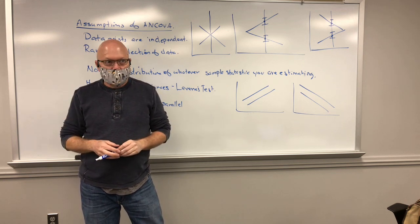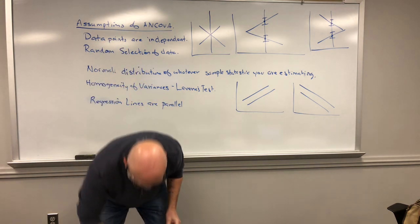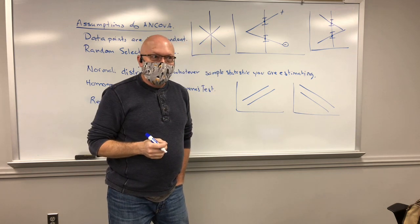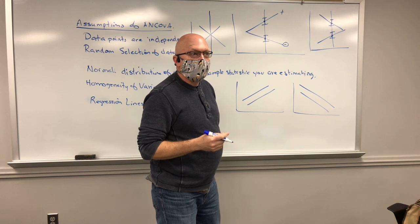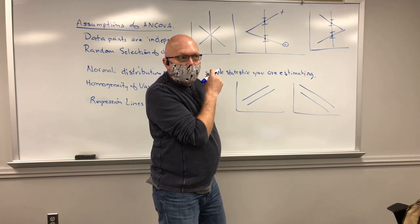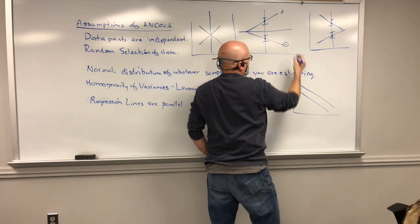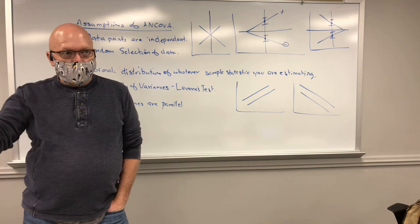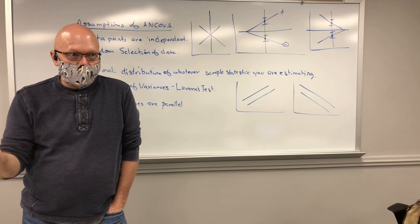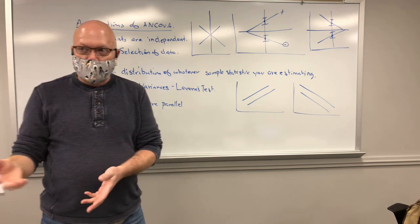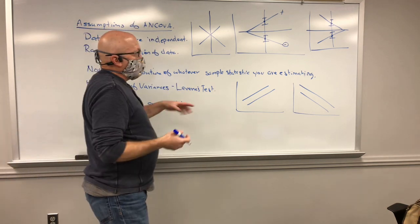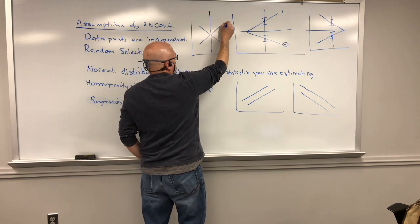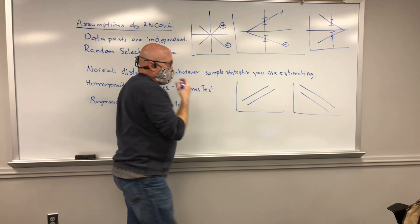If one slope is going in a positive direction and one in a negative direction, the common slope would be zero — which essentially means you wouldn't be adjusting the original data at all. You'd be assuming a slope of zero and wouldn't actually gain anything from doing the analysis of covariance.